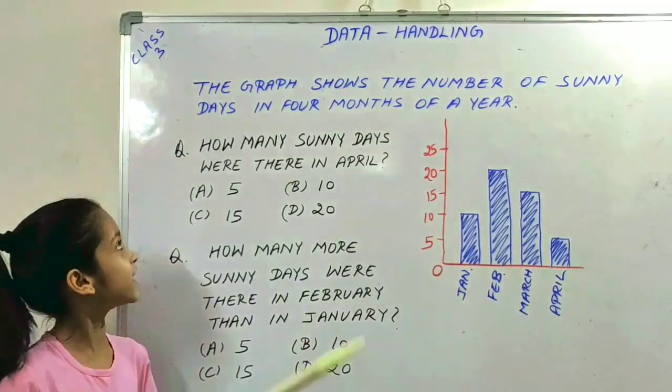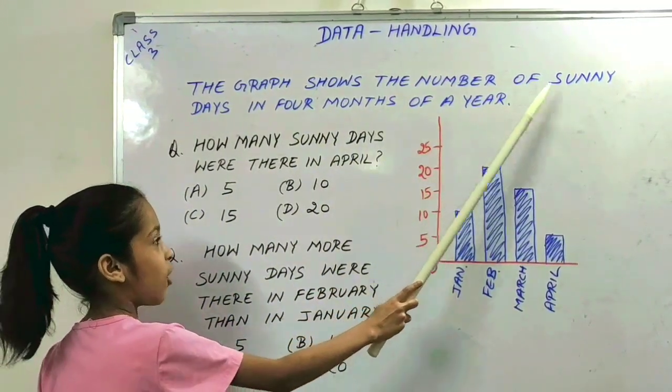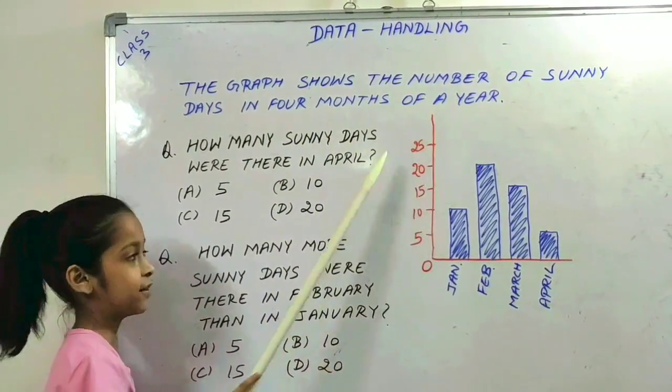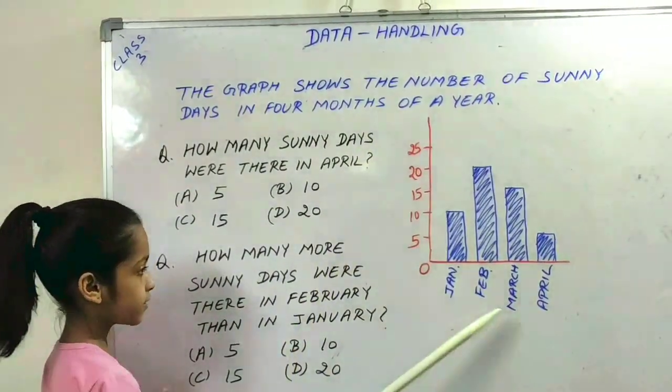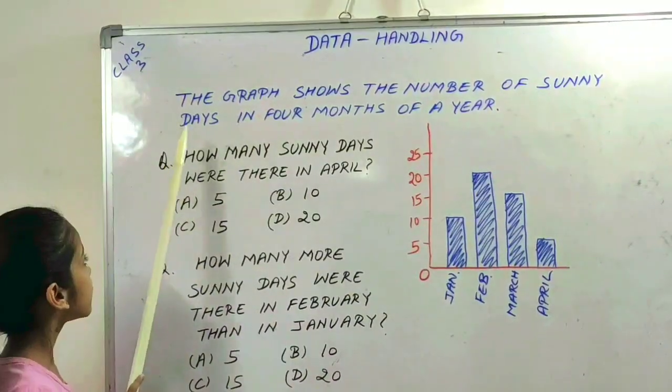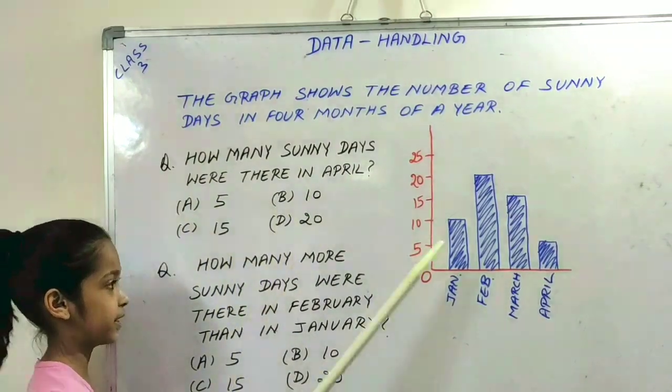Our next question. The graph shows the number of sunny days in 4 months of a year. This is our graph. Our question is how many sunny days were there in April?